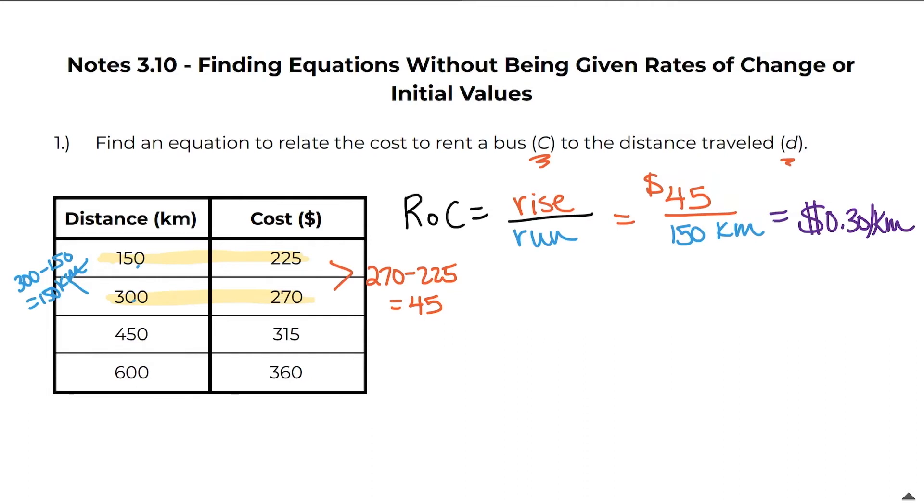And I get 0.3. So that means that it's 30 cents per kilometer. So now I know my rate of change. Now the next thing I need to do is find my initial value. To find the initial value it's a little bit trickier. So I'm going to figure out first thing I'm going to figure out is what the cost of 150 kilometers is without the initial fee.